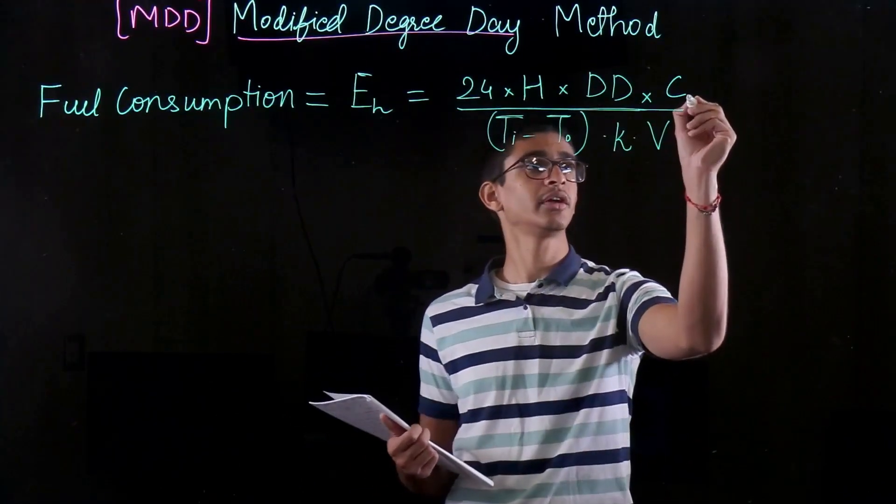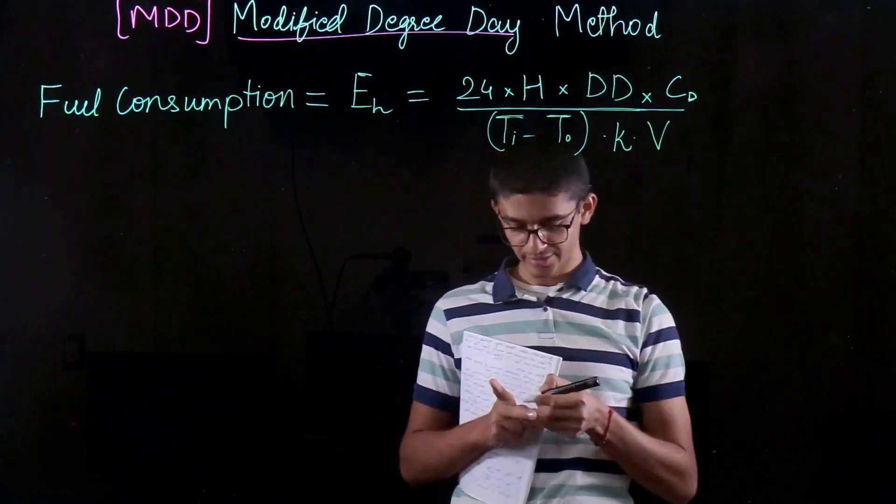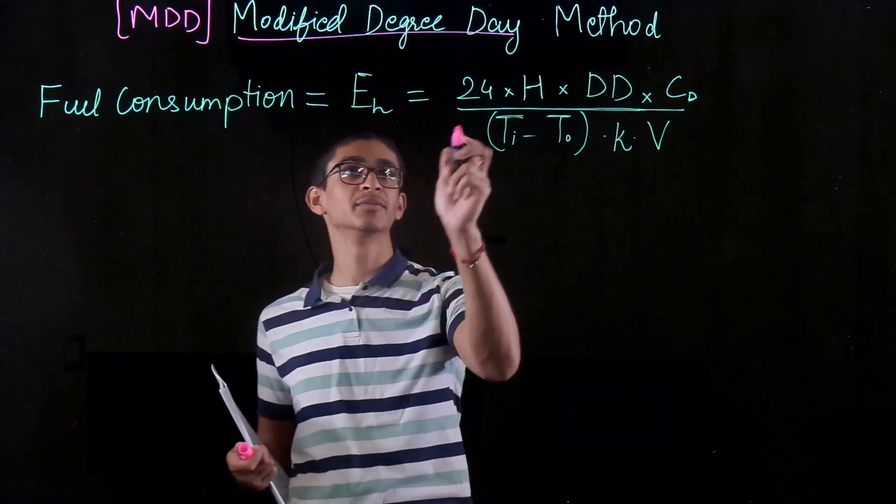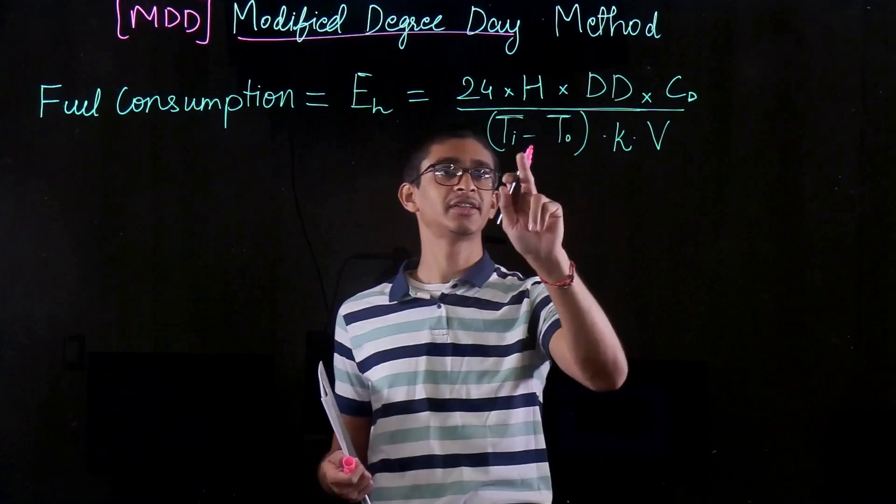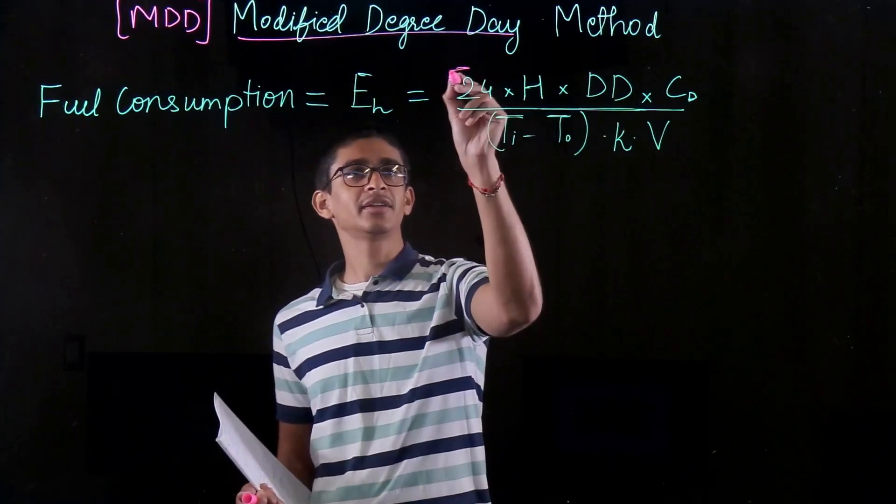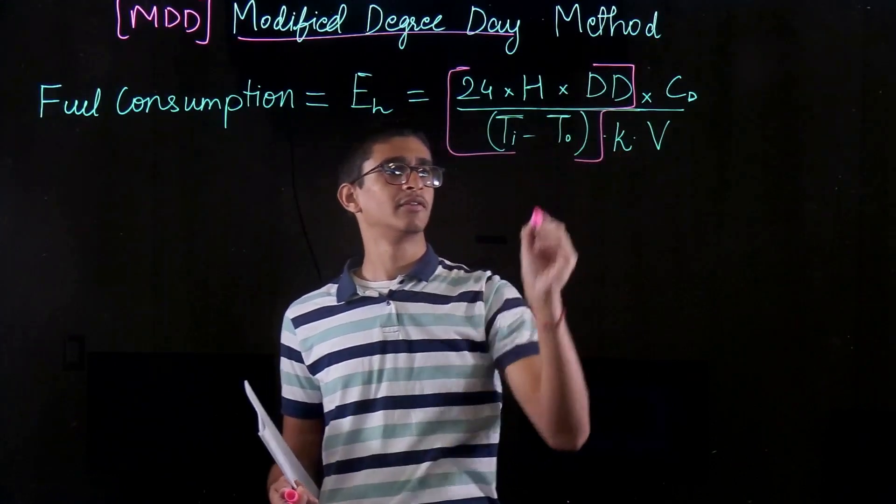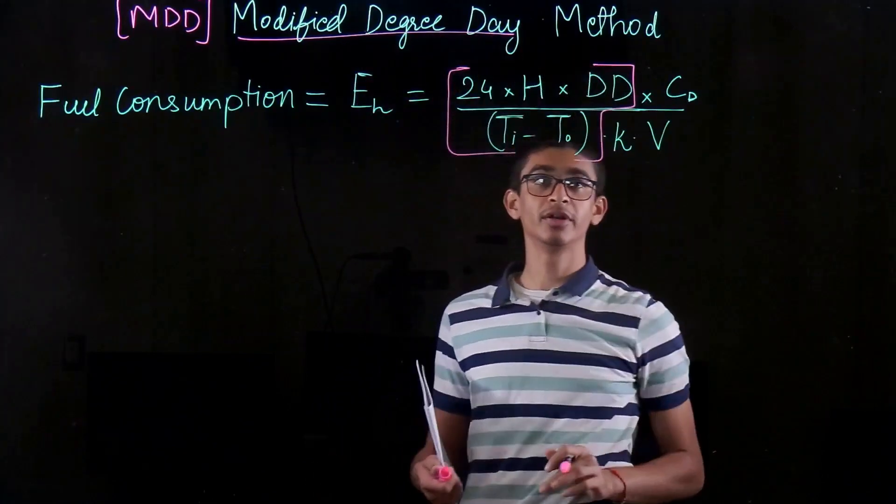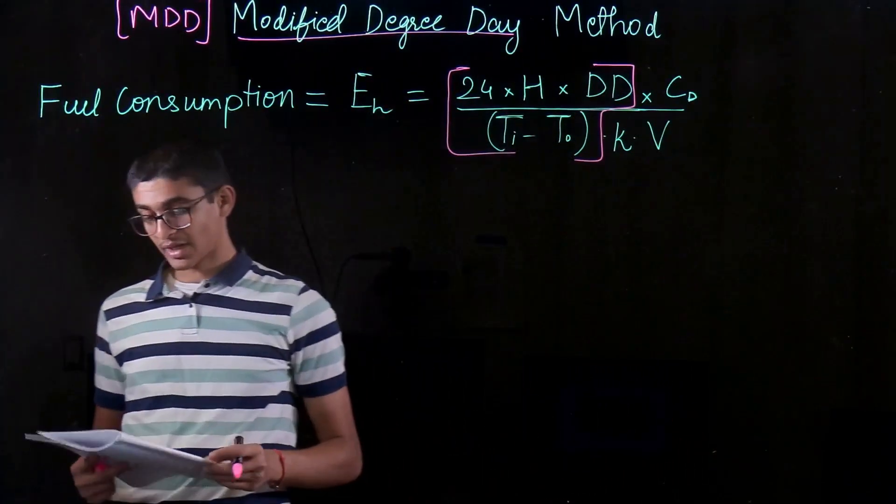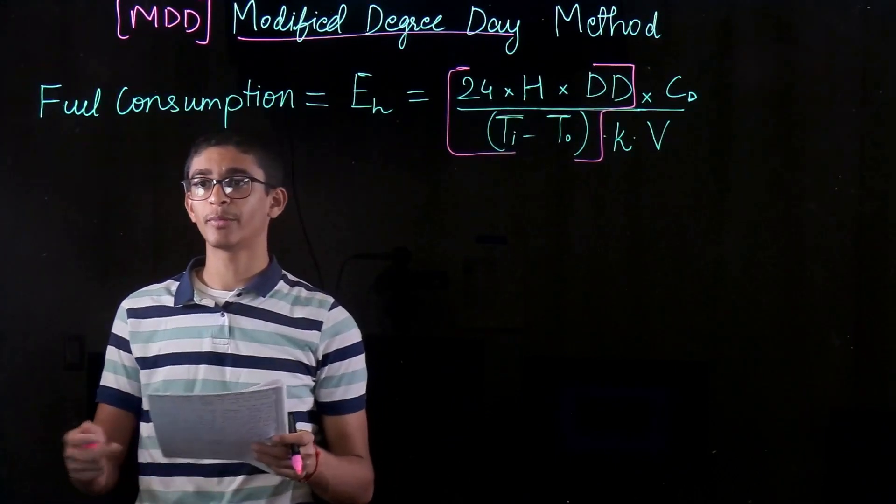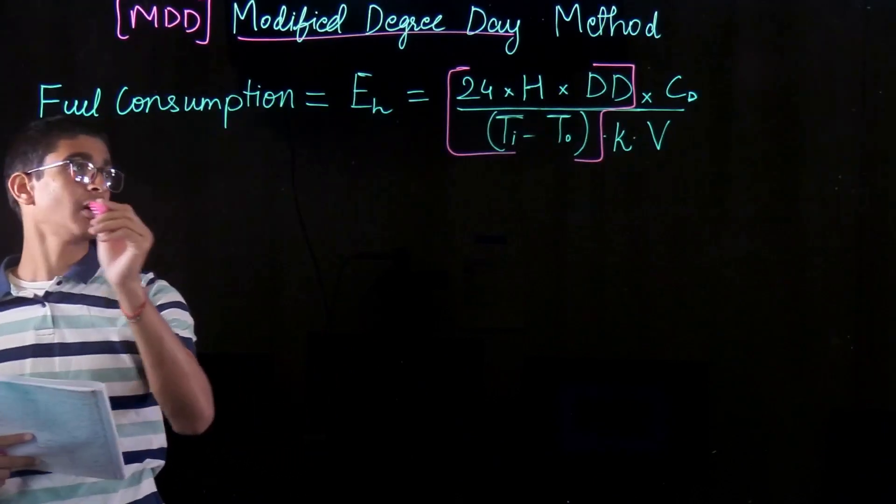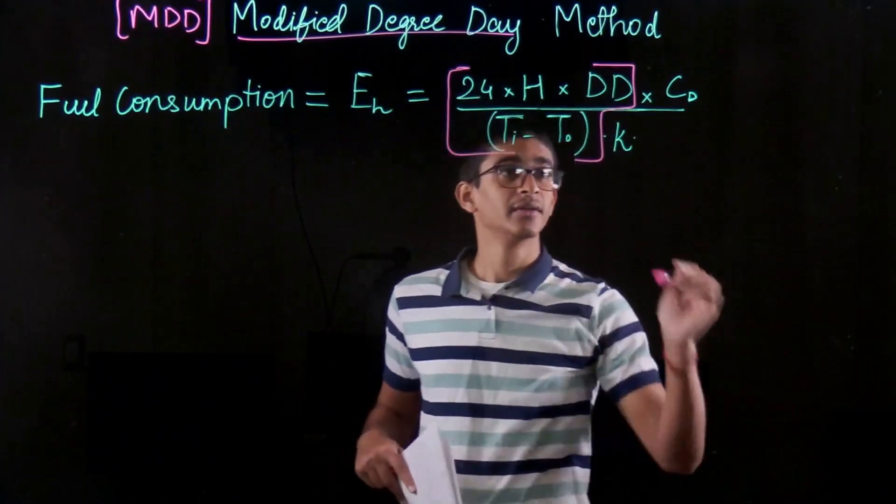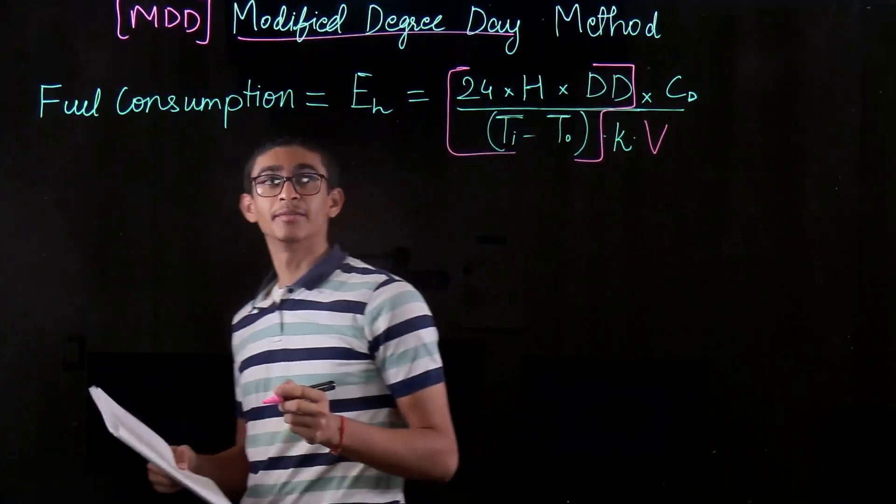So let's look at each of these factors again in detail. I hope you remember the formula for degree day method in which my fuel consumption was given by 24H into degree days divided by TI minus T out. So these many factors were the same. Three new factors have been introduced in fuel consumption estimate based on modified degree day method. V was there in the previous one also.